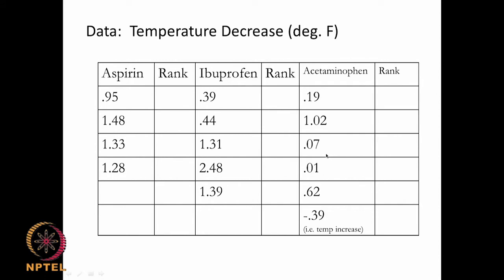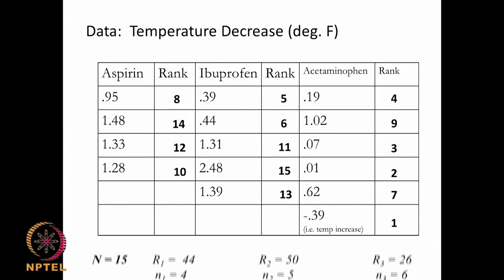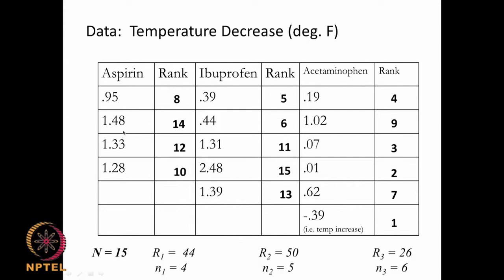We add up all the data and rank them, starting with rank 1 for the smallest and going upwards, ending with rank 15. Then we sum up the ranks for each group separately. The total dataset is N=15 (4+5+6). The rank sum R1 for aspirin (n1=4) is 44, the rank sum R2 for ibuprofen (n2=5) is 50, and the rank sum R3 for acetaminophen (n3=6) is 26. There seems to be a large difference, so we may expect the groups to behave differently.